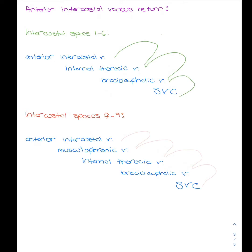For intercostal spaces 7 through 9, venous return begins at the anterior intercostal vein, travels to the musculophrenic vein, to the internal thoracic vein, to the brachiocephalic vein, ending at the SVC.